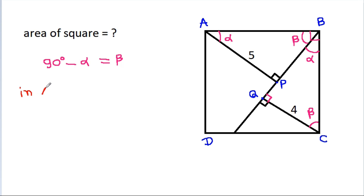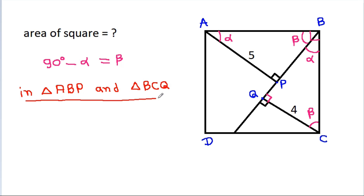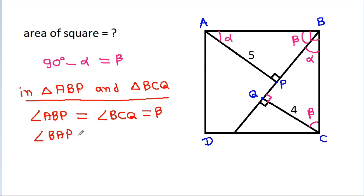So in triangle ABP and triangle BCQ, we have angle ABP equal to 90 minus alpha, that is beta. And angle BAP is equal to angle CBQ, that is alpha. And since ABCD is a square, AB is equal to BC.